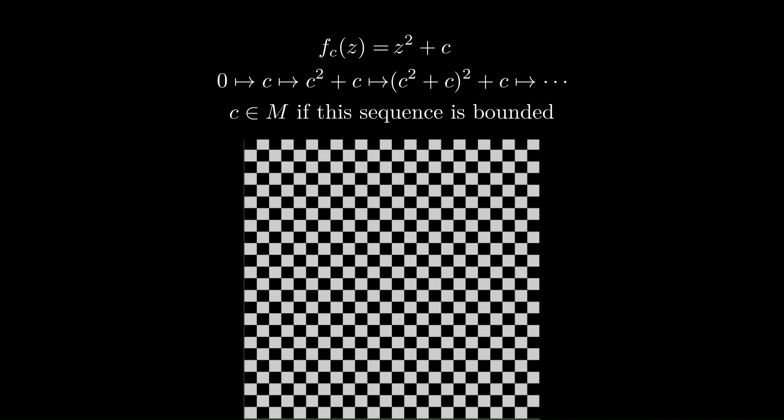One way to visualize this is to start with the complex plane. Here, it's tiled with a checkerboard pattern, and we repeatedly apply this function. So, you can think of this as the graph of values of c, and then the next graph will be c squared plus c, and then values of c squared plus c squared plus c, and so on.